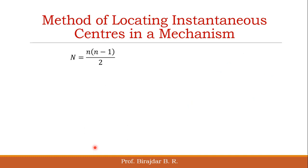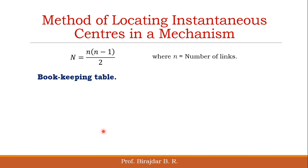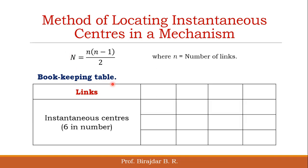Now, how to locate all these 6 instantaneous centers — which are those 6 instantaneous centers? By this formula, we get the number of instantaneous centers. And by the bookkeeping table method, we can find which are those different instantaneous centers. We have taken the example of the 4-bar mechanism, and we will see which are those 6 instantaneous centers.